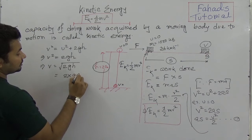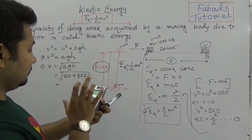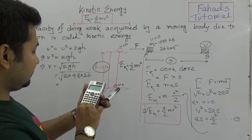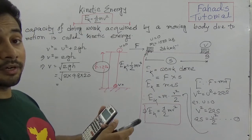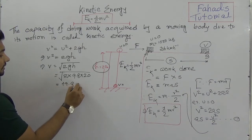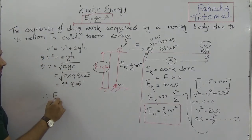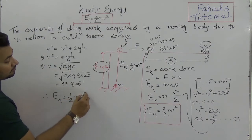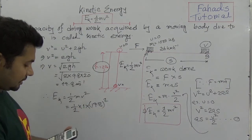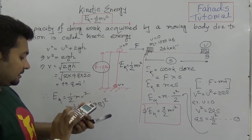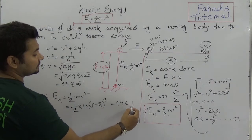Now we can find kinetic energy: EK = ½MV² = ½ × 1 × (19.8)². That is 0.5 × 1 × 392, which equals 196 joules. So the kinetic energy of a 1 kg body just before touching the ground after being dropped from 20 metres is 196 joules.